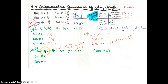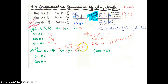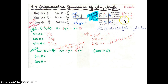Since tangent by definition is y over x, we knew that the y value was five and the x value was four, but we didn't know whether it was the x or the y that was negative. So we need this other piece of information that cosine is greater than zero. If we go back to the chart we built earlier and look at where cosine is greater than zero, meaning where it is positive.